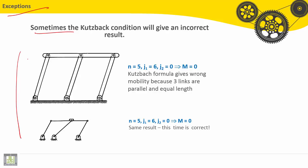Let's see the first example. The number of links L equals five: the ground, one, two, three, four, and five. Lower pair joints we have six pins: first, second, third, fourth, fifth, and sixth. And no higher pair joints for this mechanism.